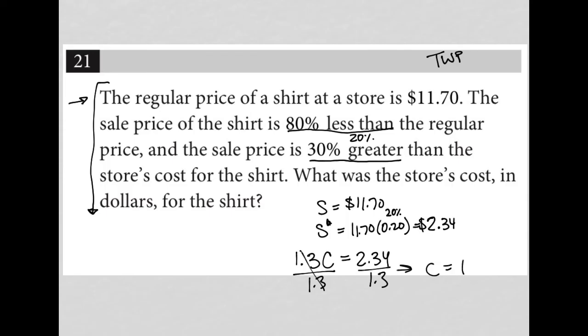So the store paid $1.80 for the shirt. They were trying to sell it for $11.70, and this is why they can take this massive discount all the way down to $2.34, but technically they still make money, right? Because they only paid $1.80 for the shirt.